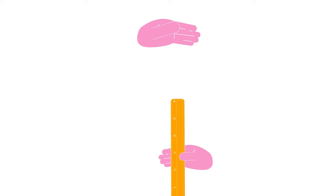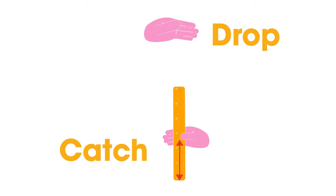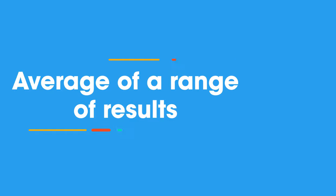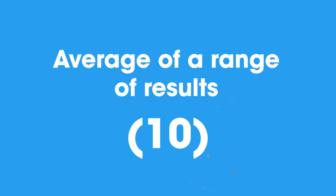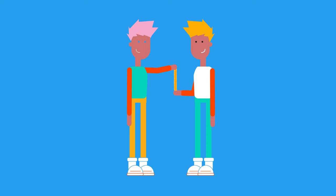No warning is given. The distance the ruler has dropped before being caught is read off the scale. This is repeated many times — so that we can work out a mathematical average of a range of results, 10 for example, to reduce random errors that can arise in this or any experiment.